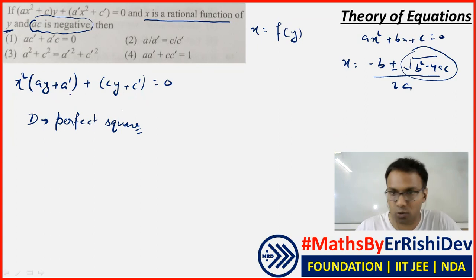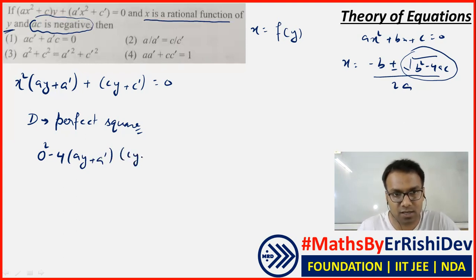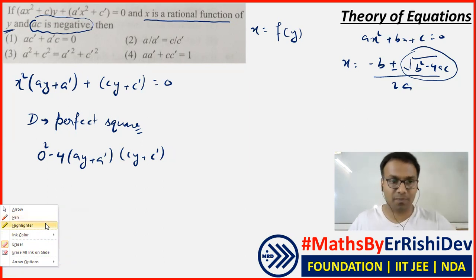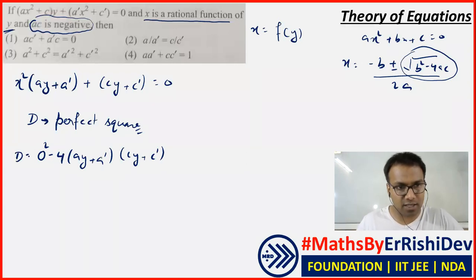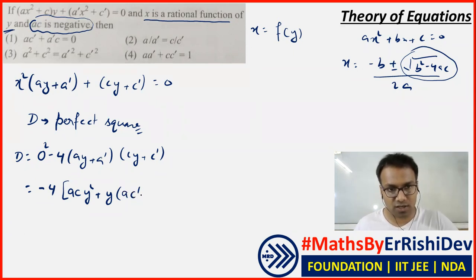The discriminant here: since x is not a coefficient, the b term is zero. So it becomes b² = 0, and then minus 4ac, where a = (ay + a') and c = (cy + c'). That is our discriminant expression. Let me check — zero squared is useless, and then we have (ay + a')(cy + c'), giving us ac·y², and the coefficient of y will be ac' + a'c, and the constant term is a'c'.